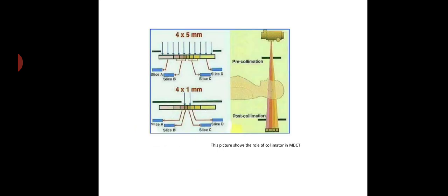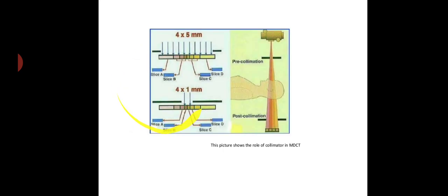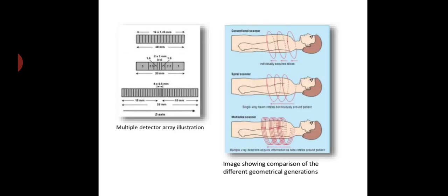This picture shows the role of the collimator in MDCT. This is pre-collimation, post-collimation, and this is post-collimation. Next is multiple detector array, multiple detector array illustration, and this is image showing comparison of different geometrical generations.